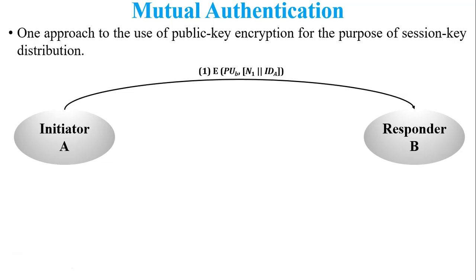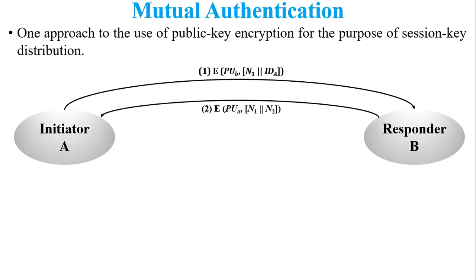Only user B can decrypt that message using B's private key. After decryption, user B gets two values: nonce1, which is a random message from user A, and the identity of user A. Then user B replies to user A with a message encrypted using the public key of user A, so only user A can decrypt it. After decryption, user A gets nonce1 and nonce2. After this second step, we can say user B is authenticated, because nonce1 was returned by user B without modification.